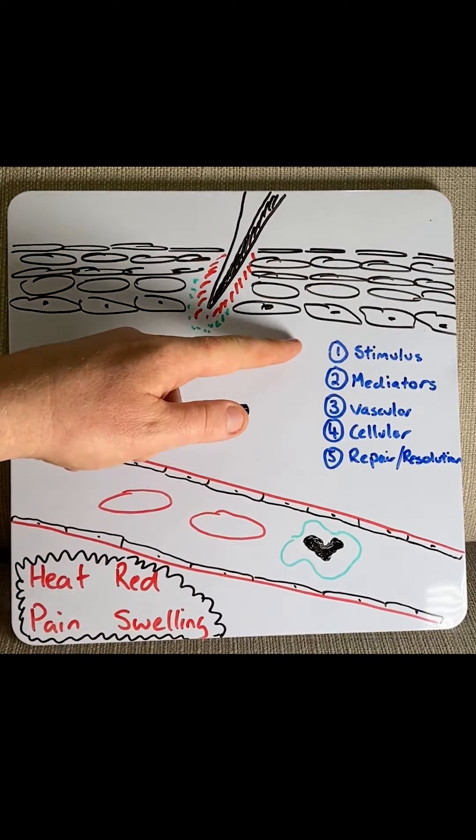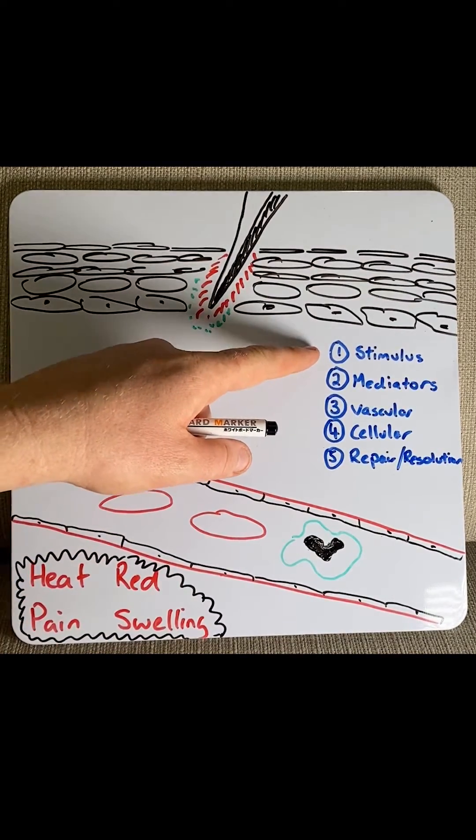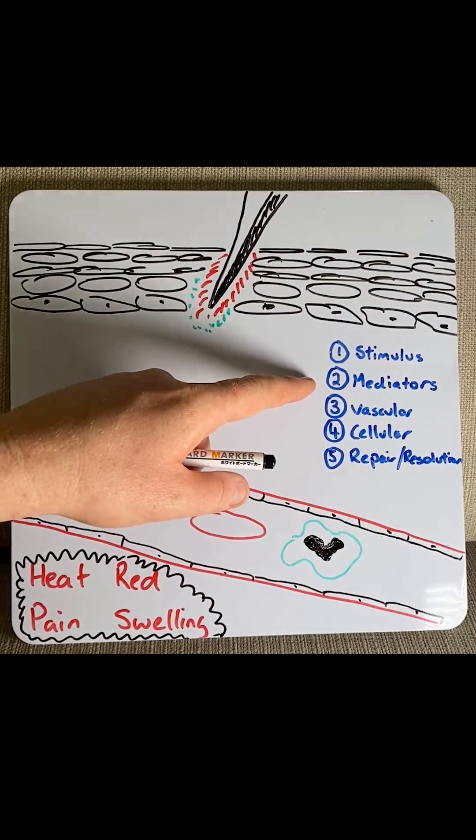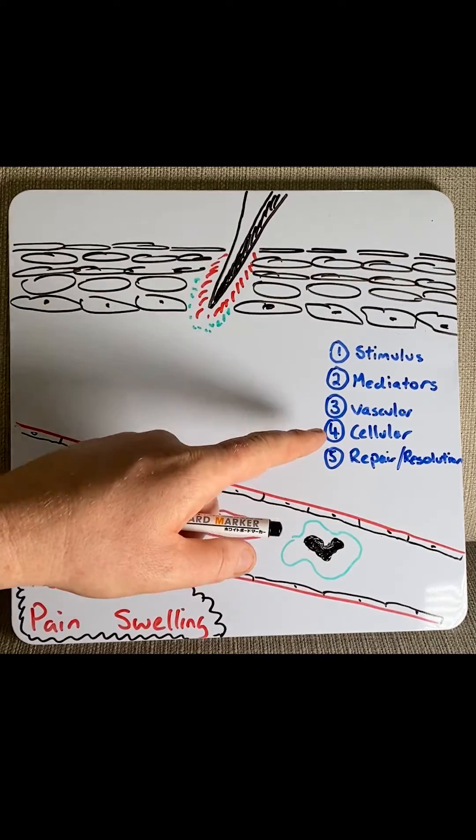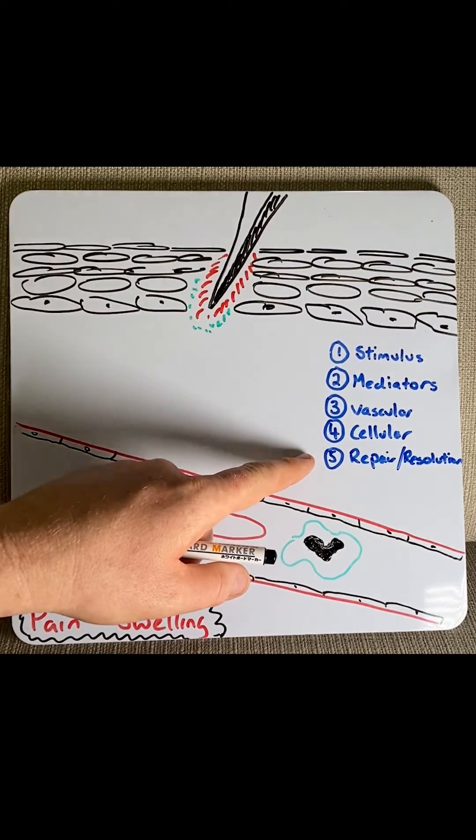The main steps that occur in acute inflammation are: first, the stimulus; then chemical mediator release; then the vascular phase; then the cellular phase; and finally, repair or resolution.